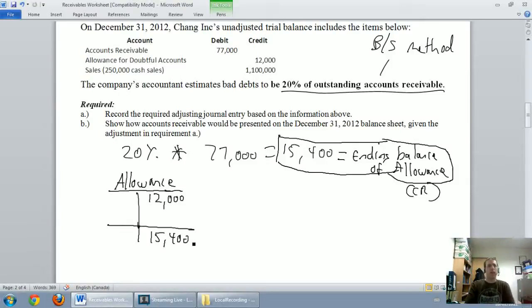Credit, and that's where it's got to end. So, how do I get from $12,000 to $15,400? Well, I'm missing a number.